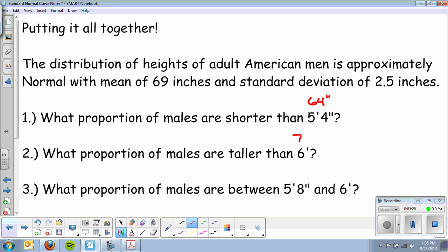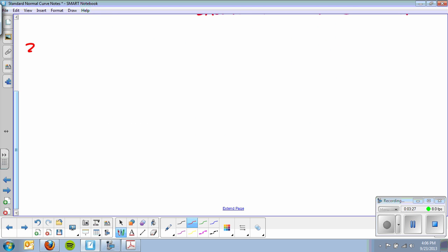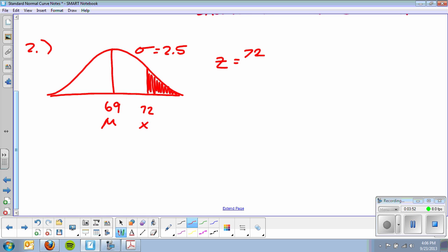Okay, question number two. What proportion of males are taller than six foot? Well again, six foot is 72 inches, so that's what I'm going to use on my graph. Number two, first thing I'm going to do, draw a picture, label the mean, standard deviation, and my x, which was 72 inches. It says greater than, so I'm going to shade to the right. Step two, get my z-score. 72 minus 69 over 2.5, and I get a z-score of 1.2.